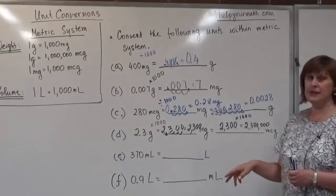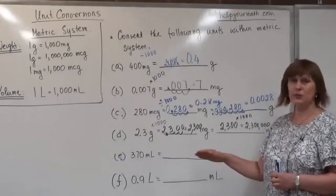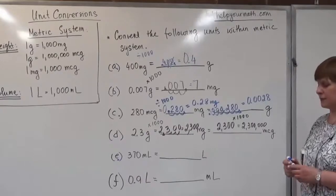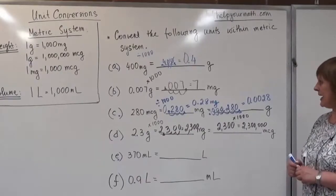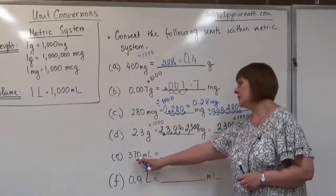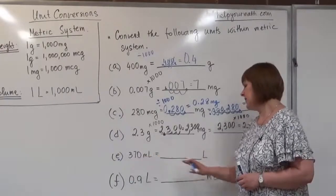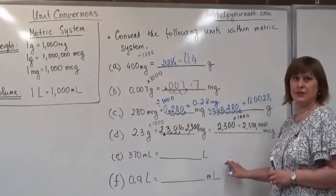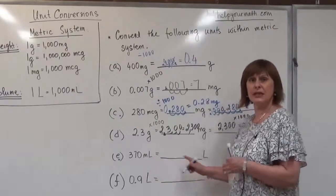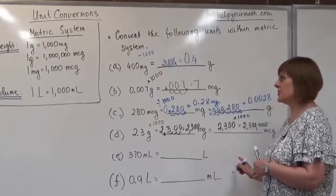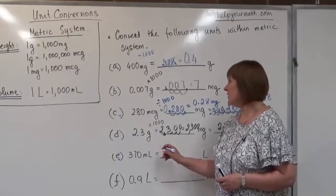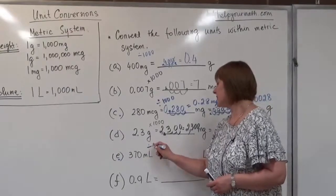Examples E and F are conversions for volume. In Example E, we need to convert milliliters to liters. The milliliter is the smaller unit and the liter is larger, so for the conversion from the smaller unit we divide by 1,000.